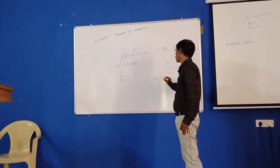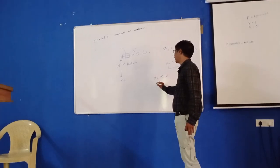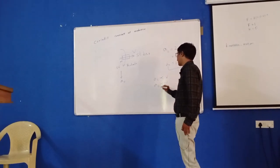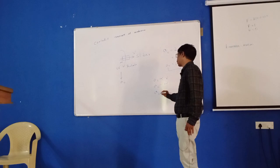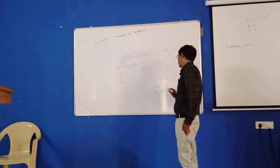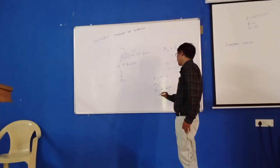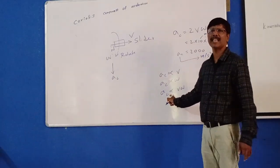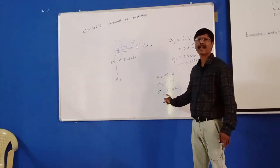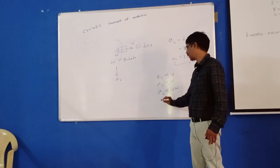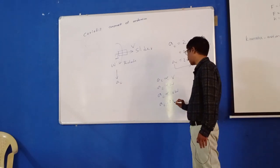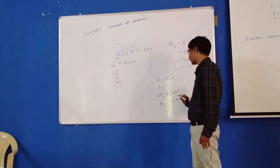AC is proportional to B, AC is proportional to omega, AC is proportional to B times omega. When you want to remove the proportionality, you want to put the constant. We can find out the constant by actually...